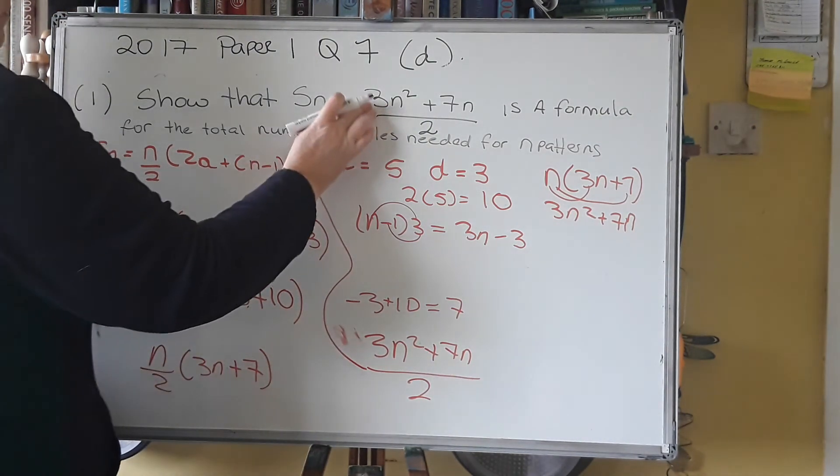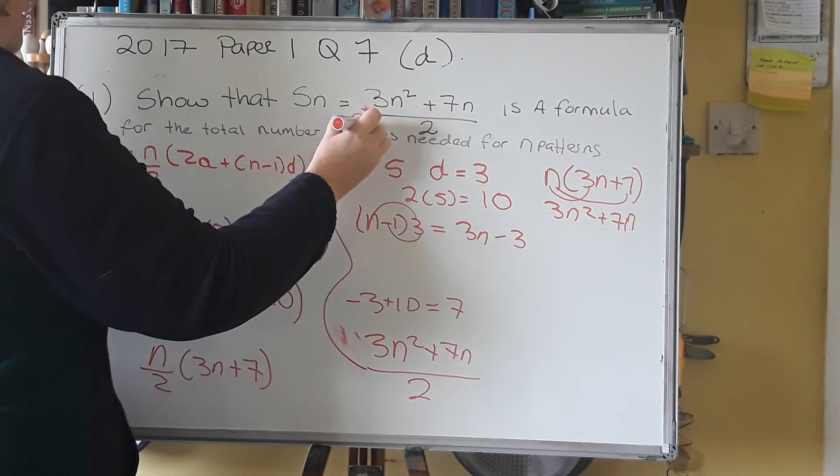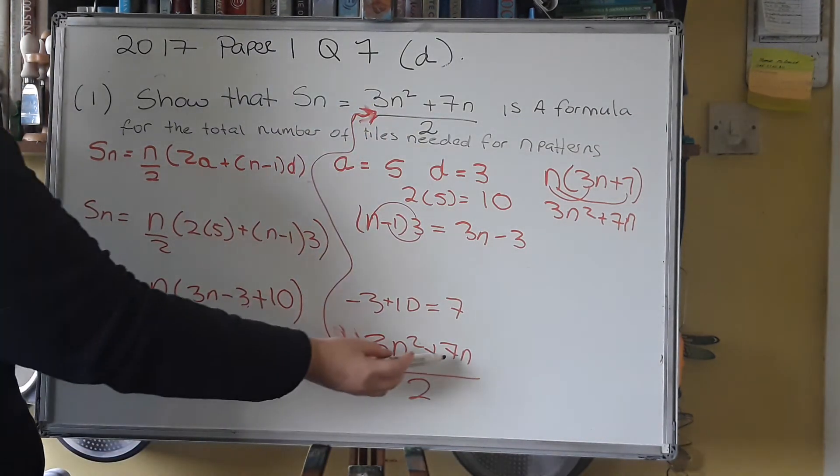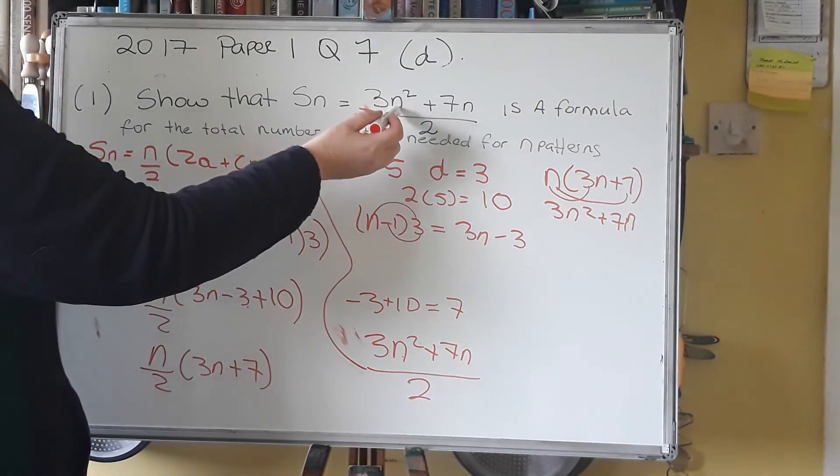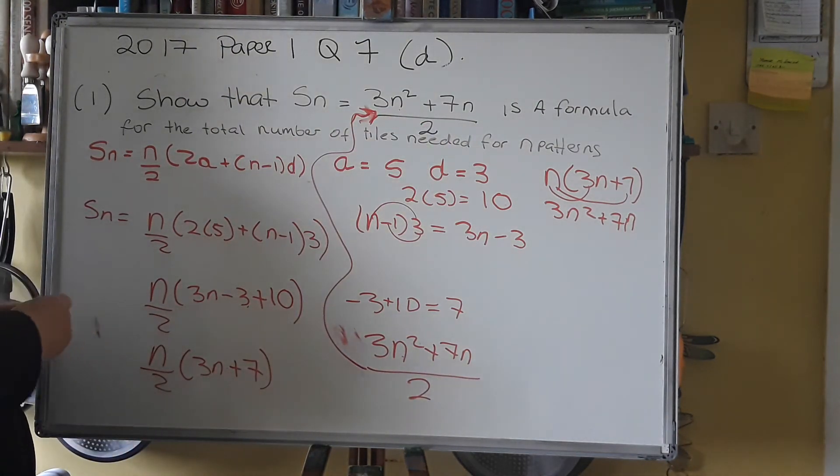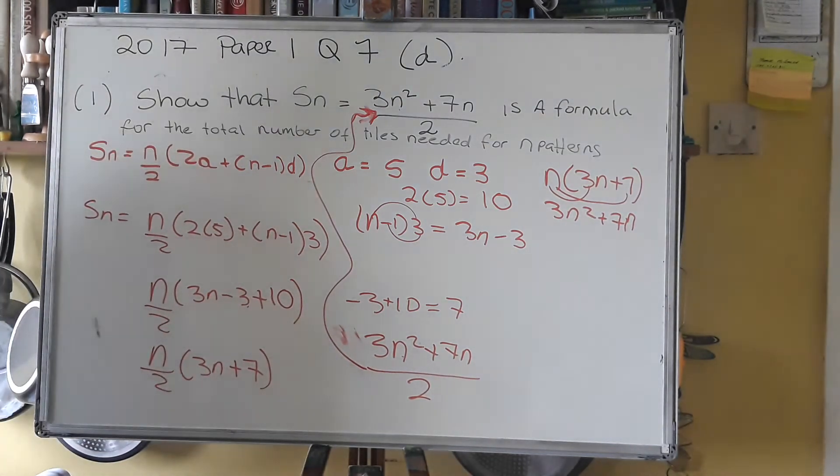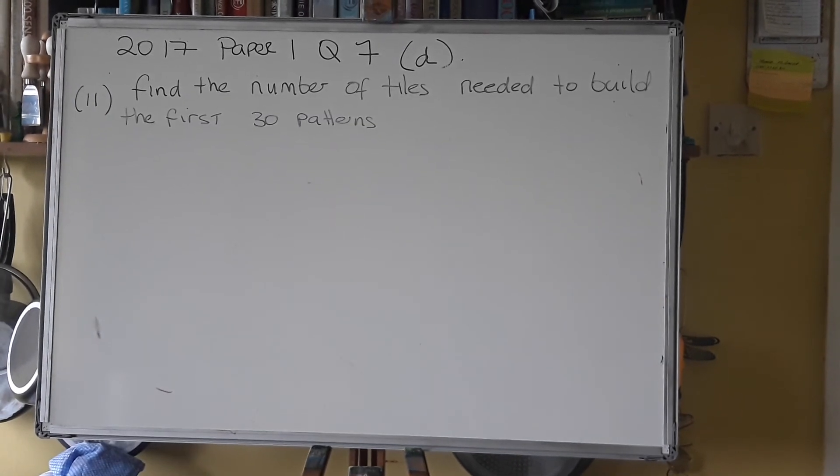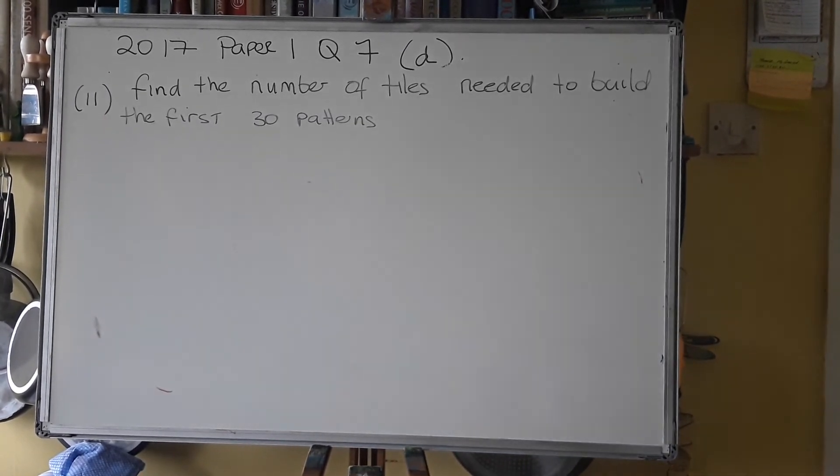That went to the wrong place. That even. Same. 3n squared plus 7n over 2.